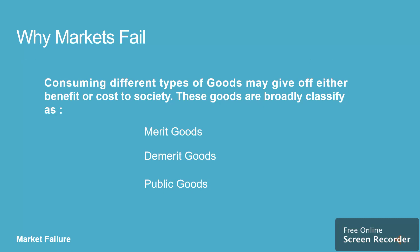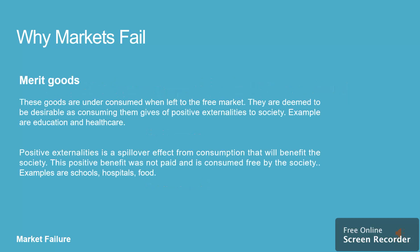Consuming different types of goods may give off benefits or costs to society. These goods are merit goods, demerit goods, and public goods. Merit goods are under-consumed when left to the free market. They are deemed to be desirable as consuming them gives off positive externalities to society. Examples are education and health care. Positive externalities are spillover effects from the consumption of a merit good that will benefit society.